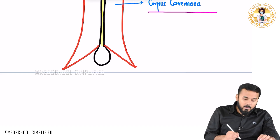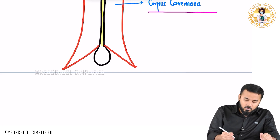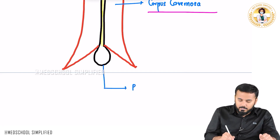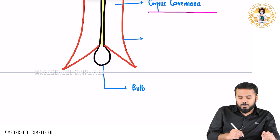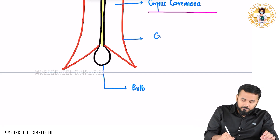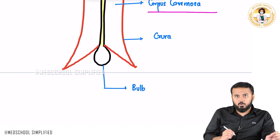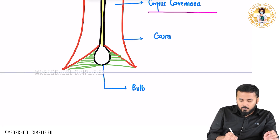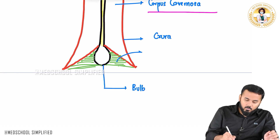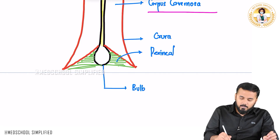Down here this bulb-like thing is called the bulb of the penis. The wedge-shaped structures on either side are called the crura of the penis. Between the bulb and the crura you have a membrane-like structure called the perineal membrane.